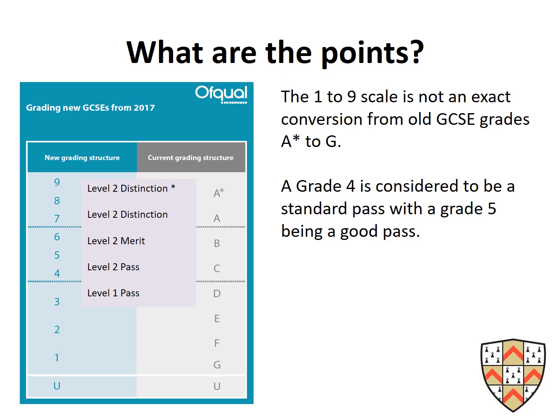The 1 to 9 scale is not an exact conversion from the old GCSE grades, as can be seen in the table to the left. Grade 9 is slightly above the old A-star. When we consider C as a pass, there is now a standard pass and a good pass — the standard pass being a grade 4 and the good pass being a grade 5.